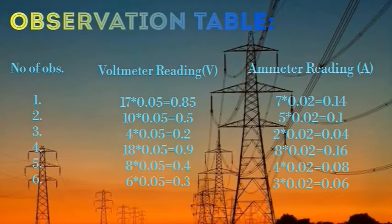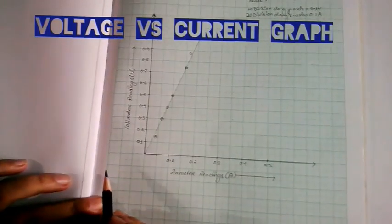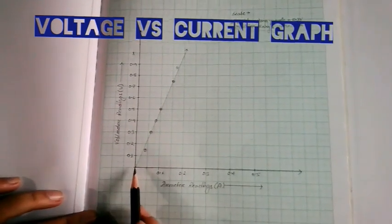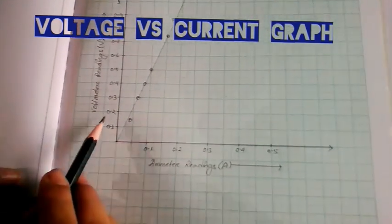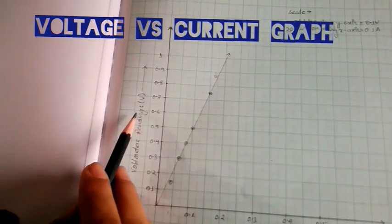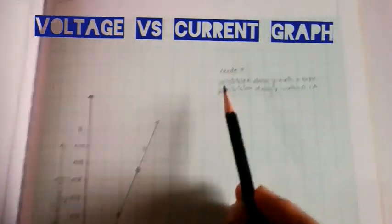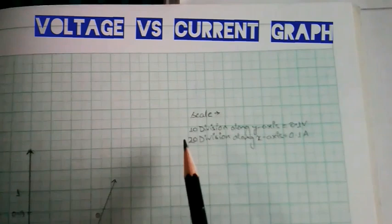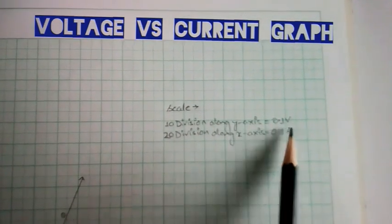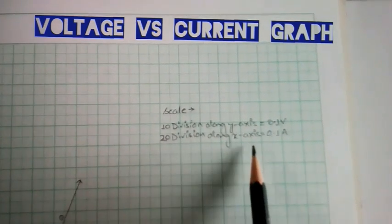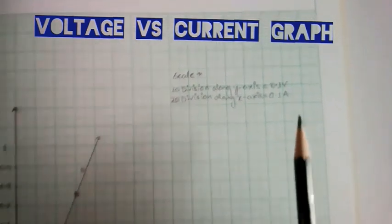We have a V versus I graph. On the X axis we represent the ammeter (current) reading and on the Y axis we represent the voltmeter (voltage) reading. We use a proper scale: 10 divisions along Y axis equals 0.1 volt and 20 divisions along X axis equals 0.1 ampere. We plot the readings and the graph is a straight line.